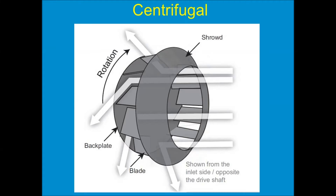The little blades when rotating push the air away from the center, create a low pressure, draw air in, then the air turns 90 degrees and shoots off the wheel.